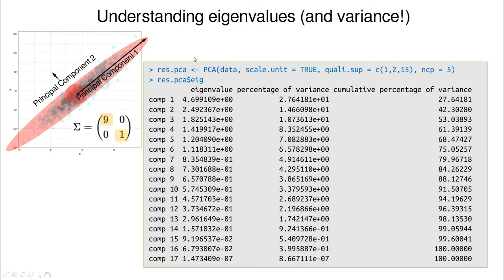Here is the basic idea. I'm using FactoMineR's PCA function with scale equals true as the default, meaning the data is standardized before analysis. Inside the result object, there's a variable called eigenvalue. The first principal component has an eigenvalue of 4.7 and accounts for 27% of the variance. Compare this to the naive example where the eigenvalue was 9 and accounted for 90%. The second has an eigenvalue of 2.5, and together the first two components account for 42% of the variance.